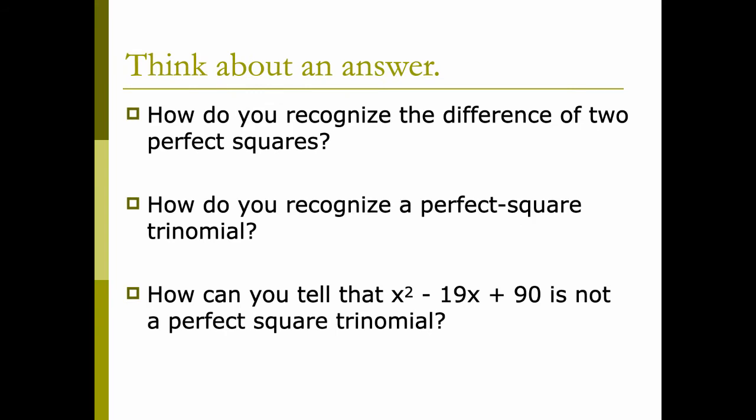How do we recognize the difference of two perfect squares? We'll have a perfect square minus a perfect square — it'll be a binomial with only two terms. The first and last will both be perfect squares. For a perfect square trinomial, we have three terms where the first and last terms are perfect squares, and if you multiply the square roots of those two end terms together and double them, they should match the middle.